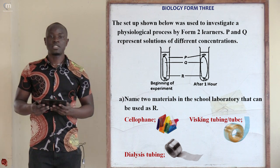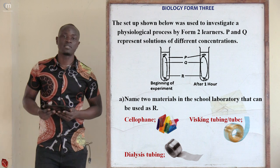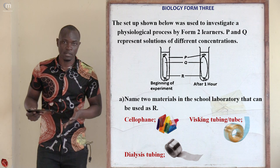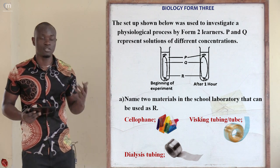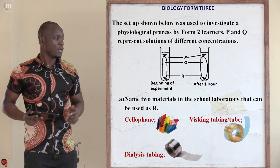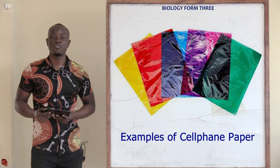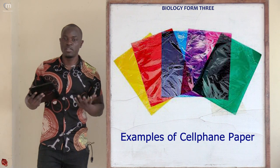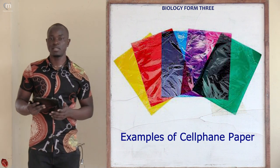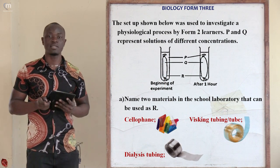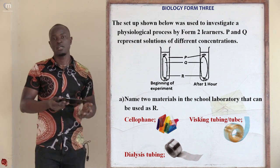The question asks: name two materials that can be used in place of R. Looking at the diagram, apparatus R is a semi-permeable membrane. The first material is visking tubing — it looks like a cello tape. We can also use cellophane, which are colored papers used in decoration but are also semi-permeable membranes. Apart from that, we can use dialysis tubing, which is also semi-permeable and allows solution to move from one side to the other.